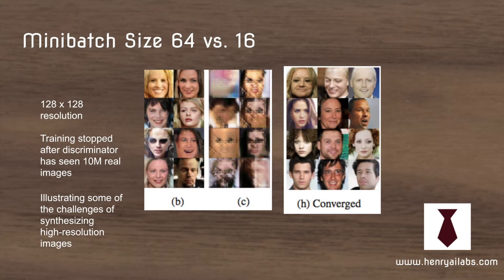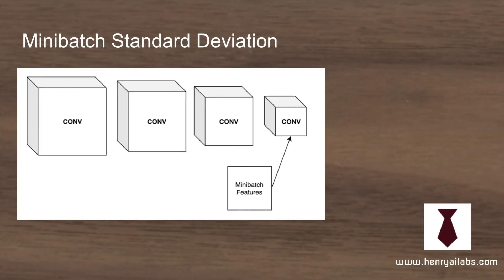They're going to add all the tricks discussed in this video to get better results with a mini-batch size of 16. The first idea, in addition to progressive growing layers, is mini-batch standard deviation. This comes from the Improved Techniques for Training GANs paper. All they do here is take the standard deviation of each feature in the mini-batch, comprise a new feature map based on this, and append it to one of the intermediate representations in the discriminator.